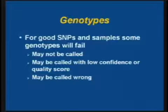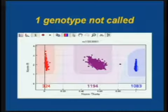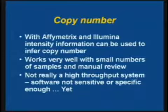Even for great SNPs and great samples, some individual genotypes will fail. They may not be called, might be called with low confidence or low quality scores, or they may be called wrong. There's one isolated genotype that didn't get called for an otherwise great SNP. Here's one for Affymetrix where one just got called wrong — clusters weren't quite in the right place. There's going to be a little bit of bad data, but hopefully it's small enough that it doesn't affect the results.